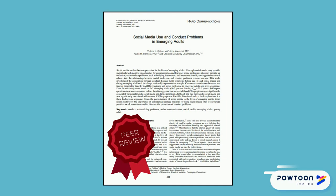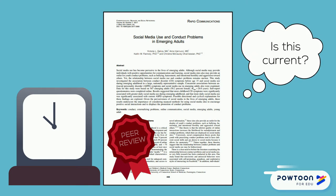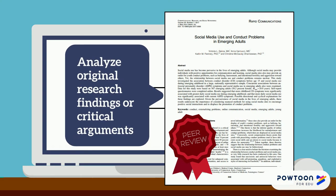Finally, peer review can take a lot of resources and time. It can take months to sometimes years from when the article was researched to when the peer-reviewed version is available to read. If you're considering the currency of an article, remember, it's relative to the editing process. You'll use peer-reviewed journal articles when you need to analyze original research findings or critical arguments. Reading these articles can also inspire you to think about important studies and unanswered questions you might research yourself.